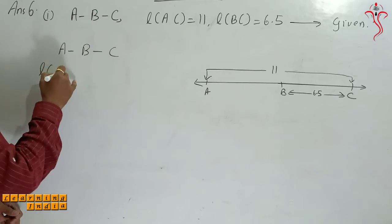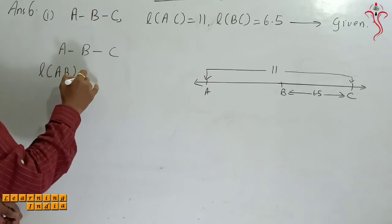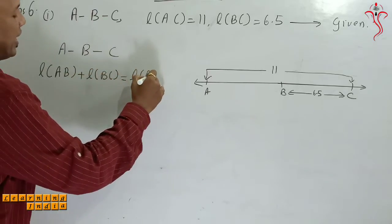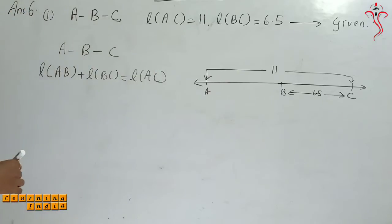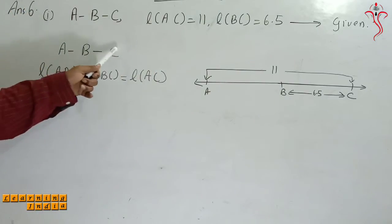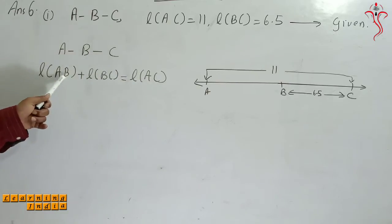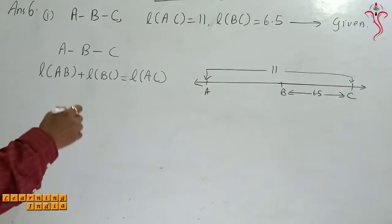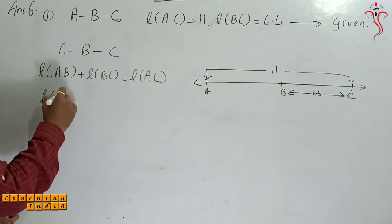So what is the length? AB plus length BC is equal to length AC. AB plus BC is equal to AC. So what is my AB? AB value is not given, so it will be length AB only.